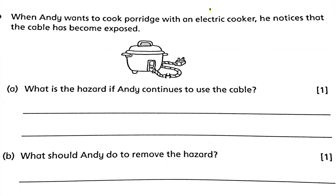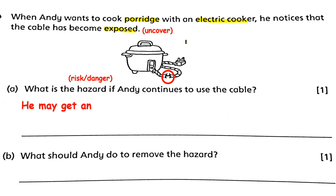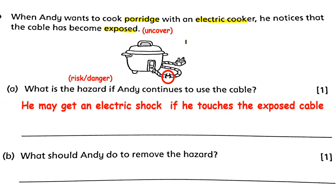When Andy wants to cook porridge with an electric cooker, he notices that the cable has become exposed. Exposed means the uncovered bare part of the wire — an open wire. Letter A: What is the hazard if Andy continues to use the cable? Hazard means risk or danger. If Andy continues to use the cable, he may get an electric shock if he touches the exposed cable accidentally. That is the risk or danger of using a broken wire or exposed cable in an electrical appliance.